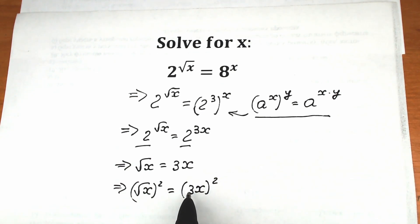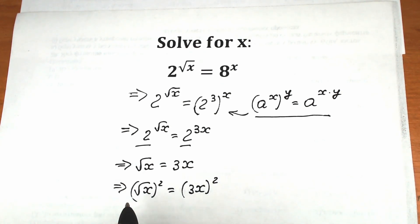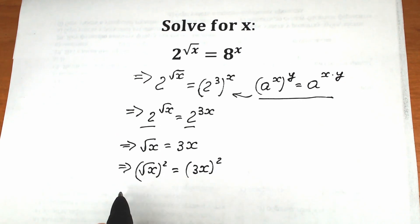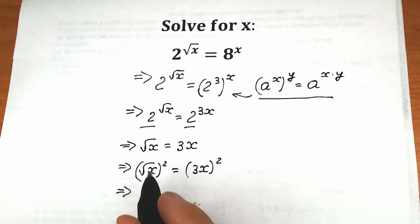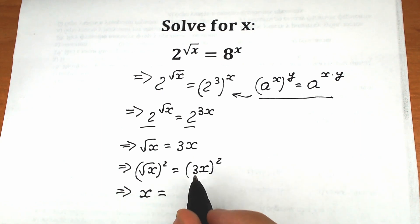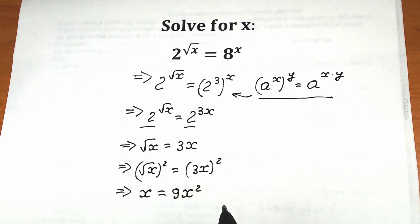Now we use the property that (3x)² equals 3 squared times x squared — not just 3x squared; we need to raise both elements. On the left side, square root of x squared gives us just x. So we have x equals 9x squared.